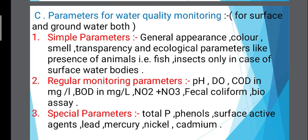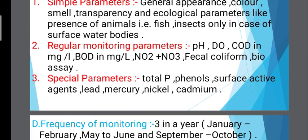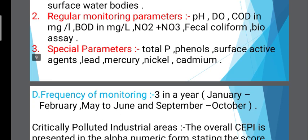The three sub-parameters for water quality monitoring are: first, simple parameters — general appearance, color, smell, transparency, and ecological parameters; second, regular monitoring parameters — pH, dissolved oxygen, chemical oxygen demand, biological oxygen demand; and third, special parameters — total phosphorus content, phenols, surface active agents, lead, mercury, nickel, cadmium, etc.